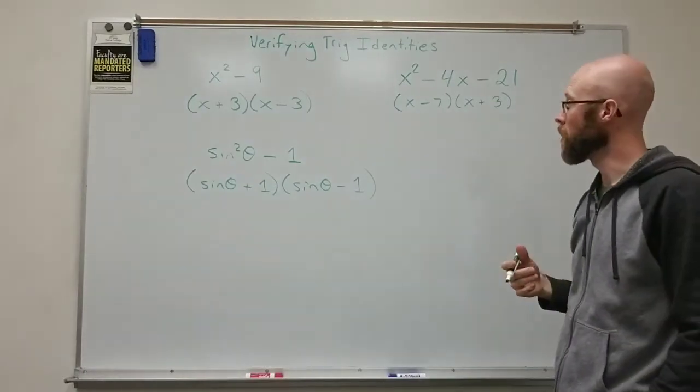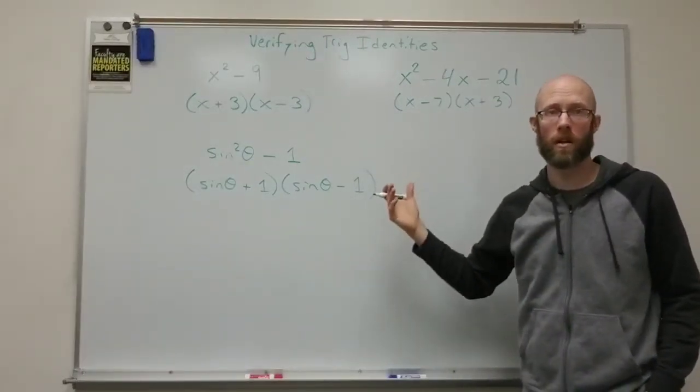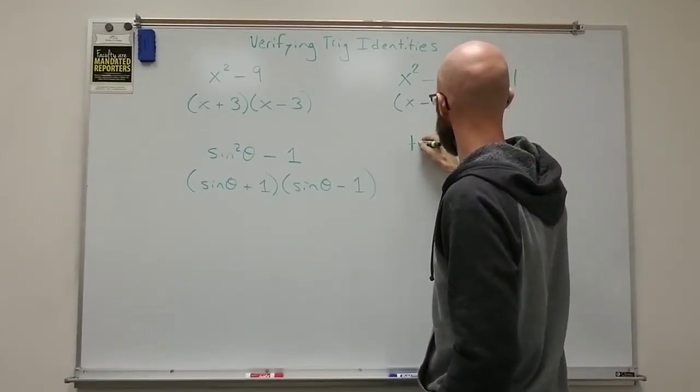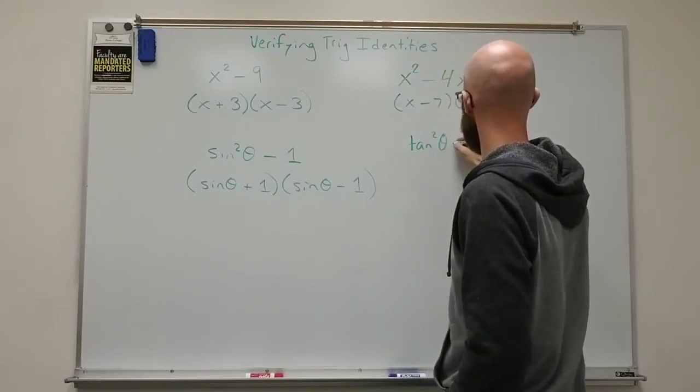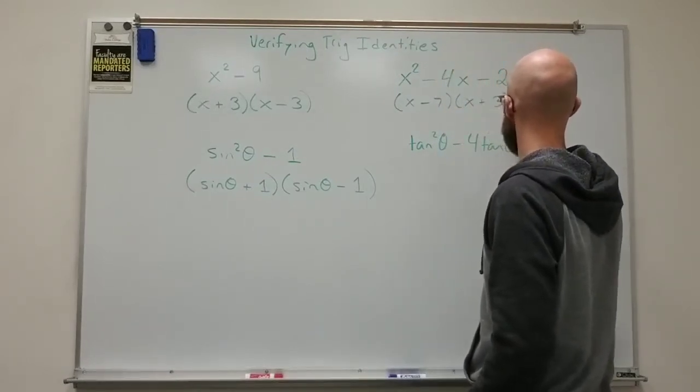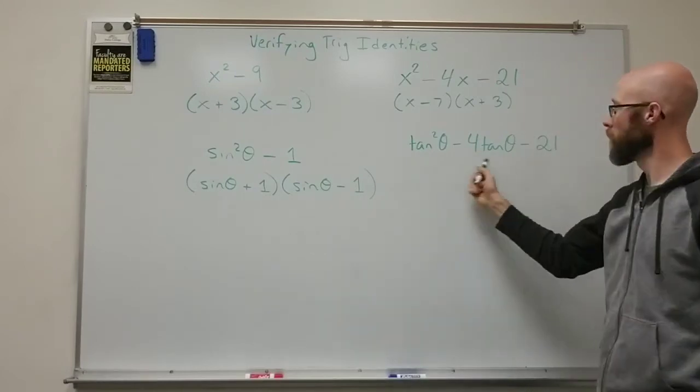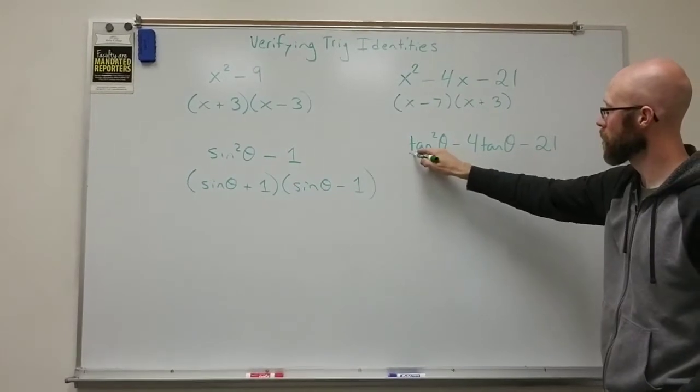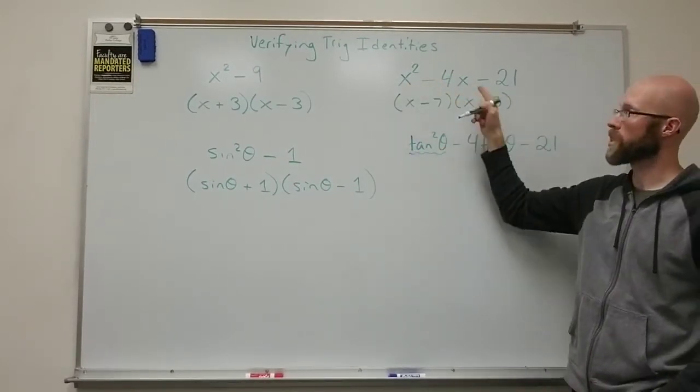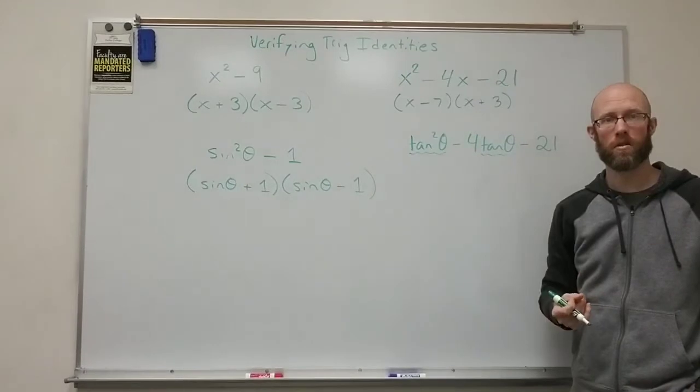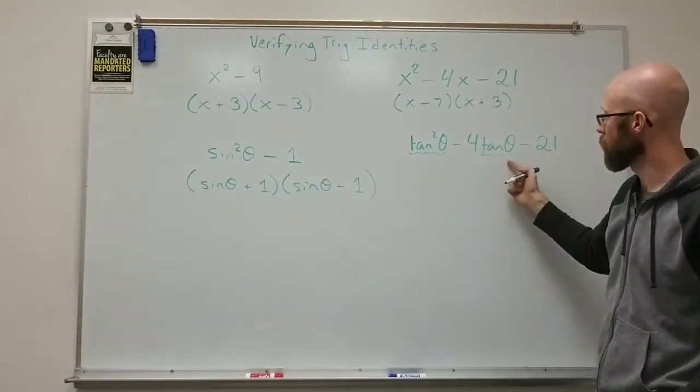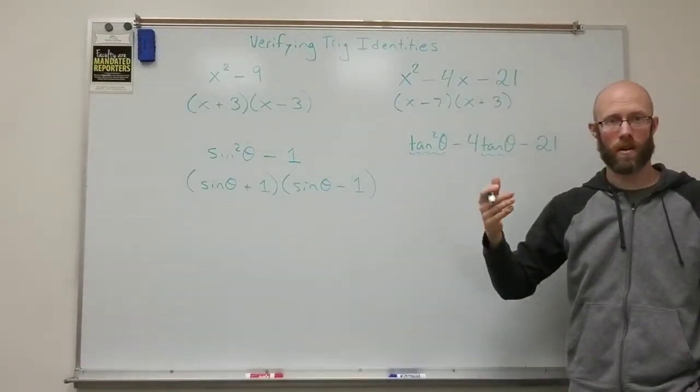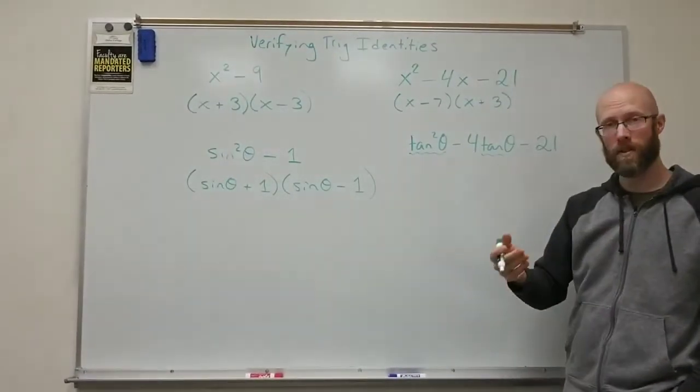A similar trigonometric example would be something like the tangent squared of theta minus four times the tangent of theta minus 21. This is also factorable in a similar way. The tangent represents the x in the original, in the previous polynomial. And so instead of factoring it into x minus seven and x plus three,